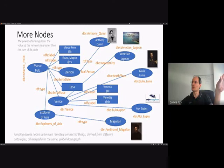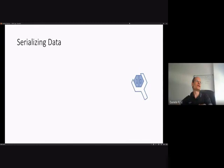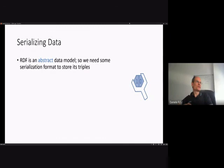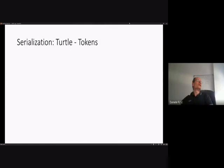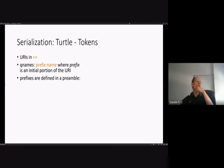This data must somehow be stored, which means serializing it. Since RDF is an abstract data model, we need serialization formats to store triples. There are several formats targeted at different scenarios. For our purposes, we will look at Turtle, which is the easiest for humans to understand. In Turtle, URIs are wrapped in angle brackets, and QNames use a preamble that defines each prefix.